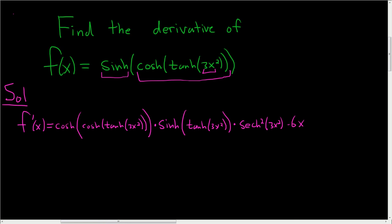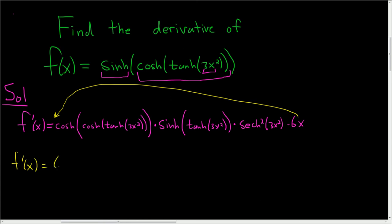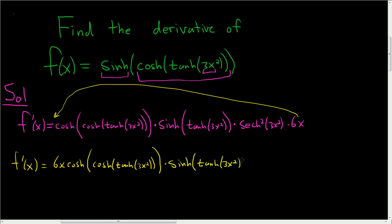The only thing to do is to rewrite this and put the 6x way out in front. So f prime of x is equal to 6x times the hyperbolic cosine of the hyperbolic cosine of the hyperbolic tangent of 3x squared, times the hyperbolic sine of the hyperbolic tangent of 3x squared, times the hyperbolic secant squared of 3x squared.